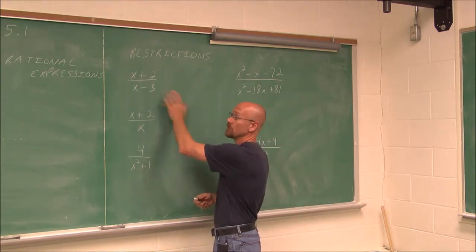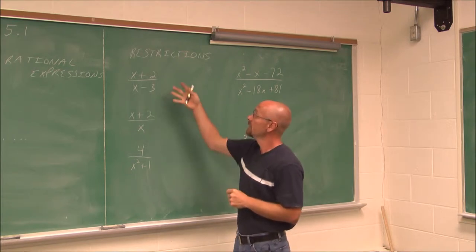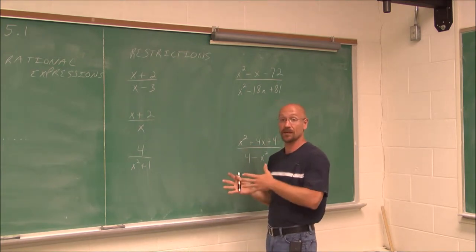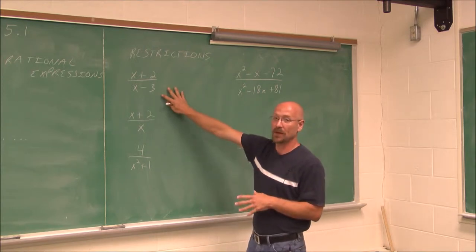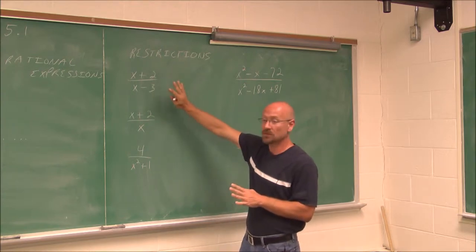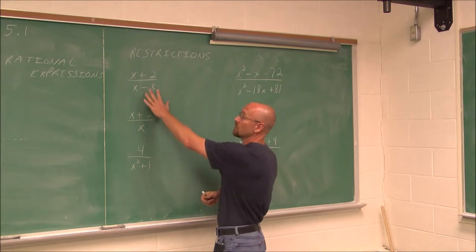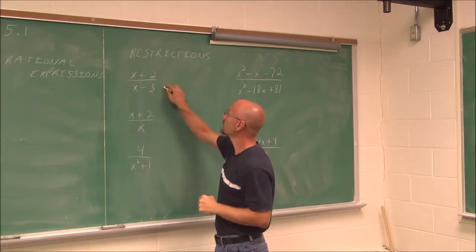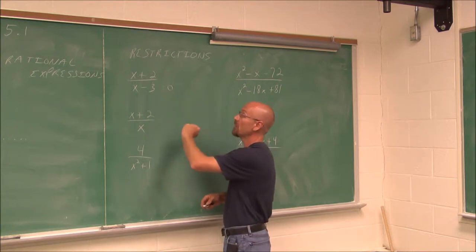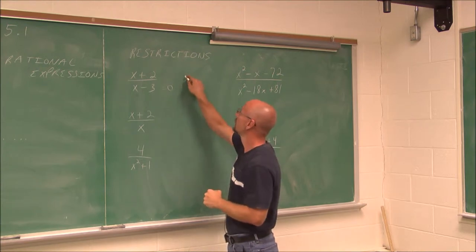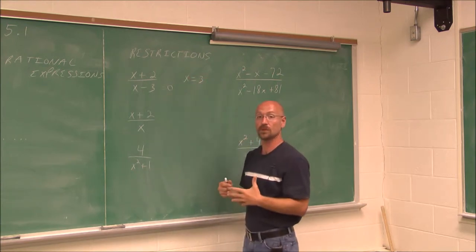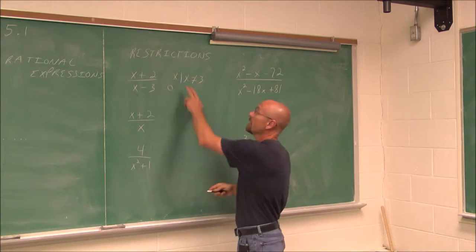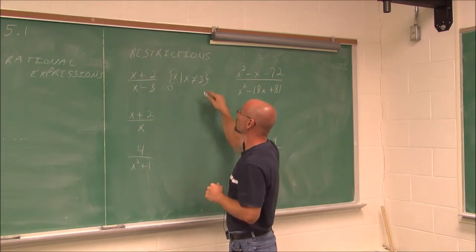If I'm asked to find the restrictions of a rational expression, the first thing I concentrate on is can I factor it? So if we look at the denominator and it's in simplest form with nothing to factor, we set the denominator equal to 0 and solve. Adding 3 to both sides gives x equals 3. That would make our denominator equal to 0, so our restriction is x such that x is not equal to 3.